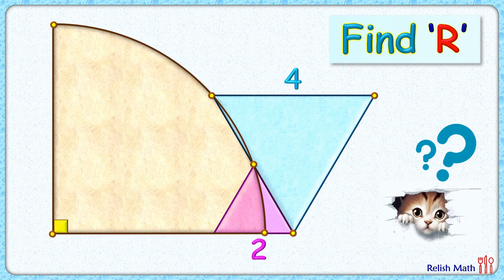Welcome everyone, this is a really interesting question to solve. We are given a quadrant and two equilateral triangles with side lengths 2 and 4 centimeters each. The exciting part is, with this limited data, we have to find the radius of this quadrant.